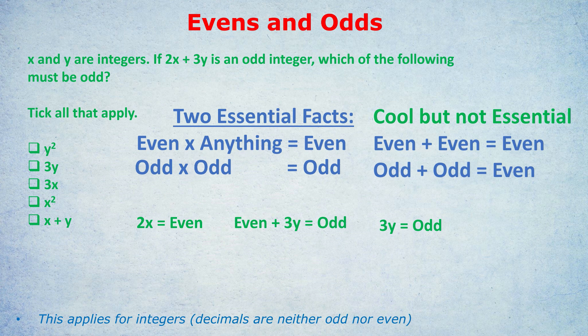3 is an odd number, so we have an odd number times Y equals odd. What is Y — even or odd? Y would be odd. Remember the second essential fact: an odd times an odd gets an odd. So we know that Y is an odd number.